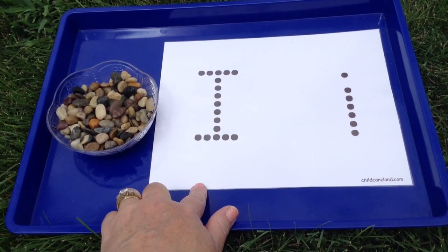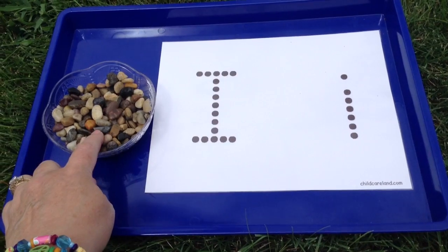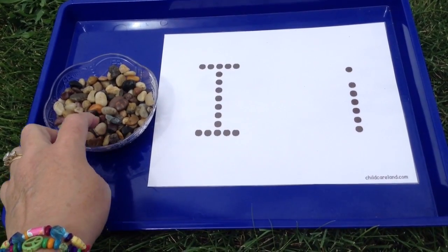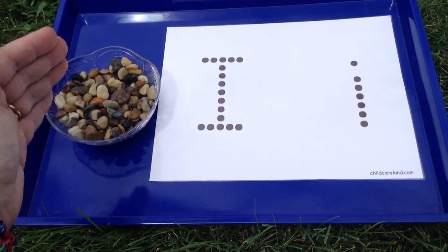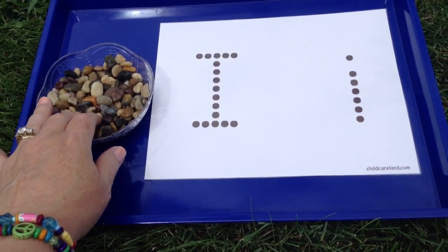You need to have the letter tracing mats. Then we have what are called filler rocks. These are decorative rocks that can be purchased at Walmart or craft stores. You usually find the flat marbles. Those marbles look like marbles, but they're cut in half and flat on one side. They're in that section as filler.